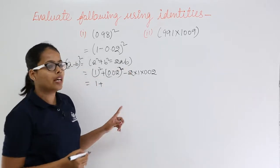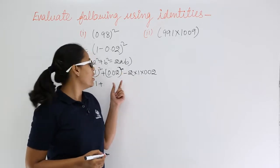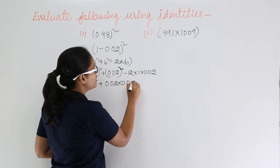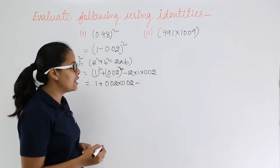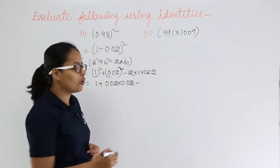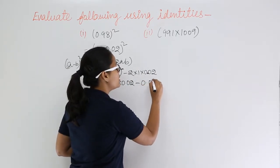Now here we are taking square of this. So when you multiply 0.02 into 0.02, I will solve this later. 2 into 2 is 4. You will be getting 0.04.